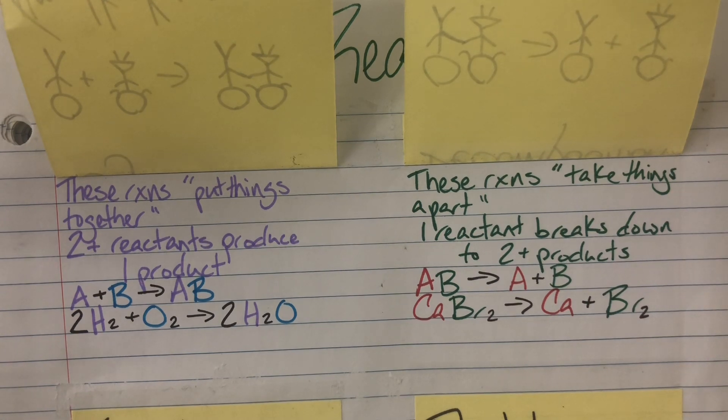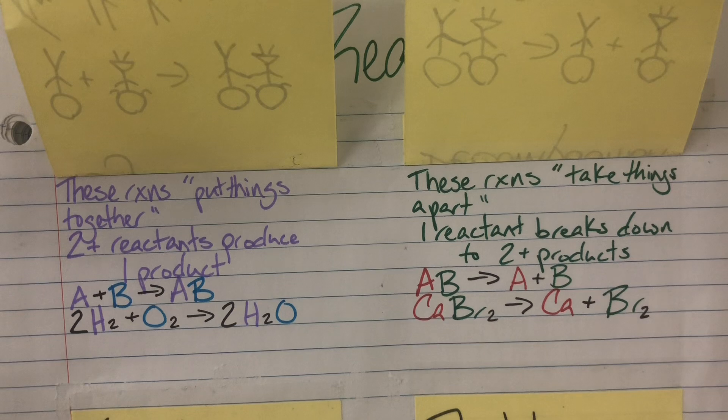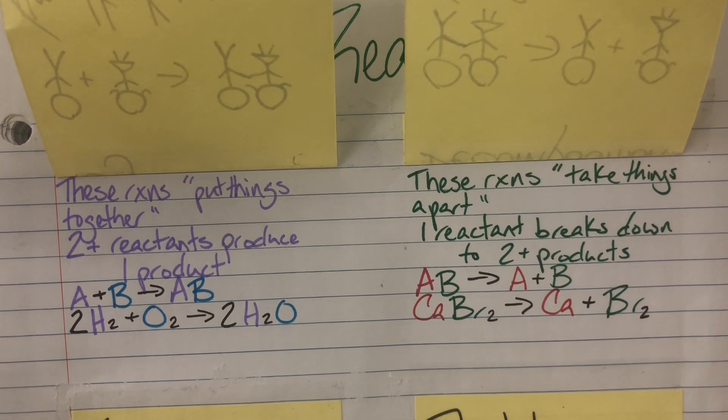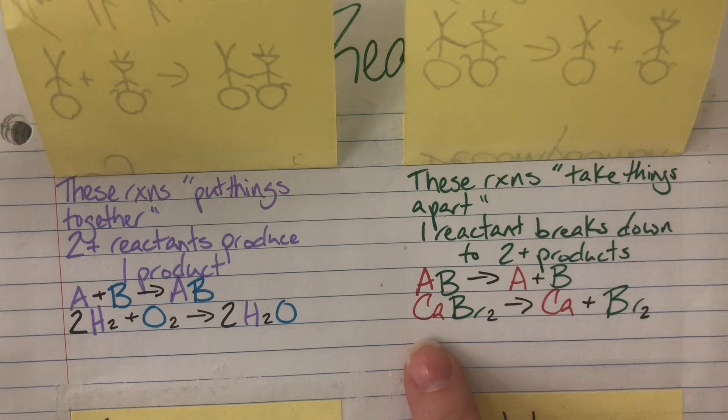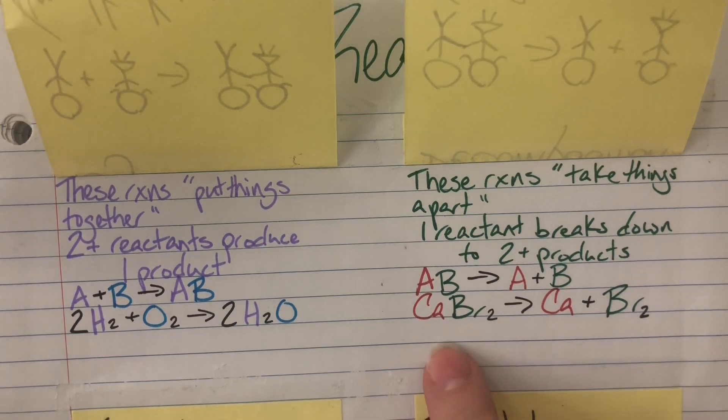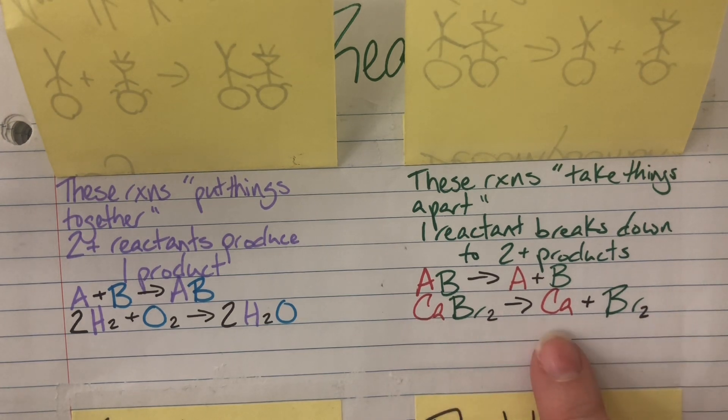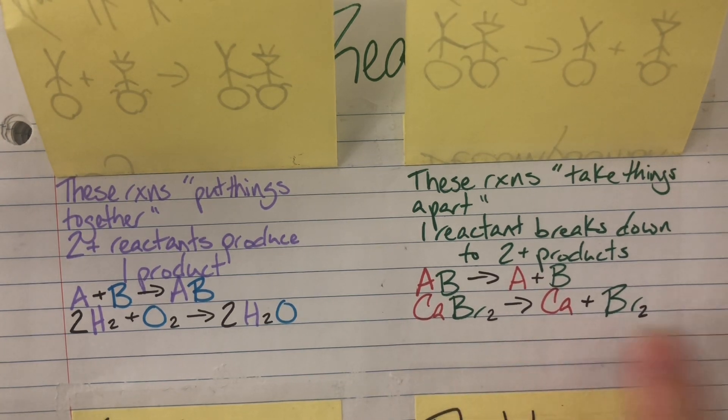Decomposition reactions are going to take things apart. I will always have one reactant that will break down to form multiple products, two or more products. Letter example would be AB decomposing into A plus B. Actual example of a decomposition reaction would be calcium bromide breaking down to form calcium and bromide.